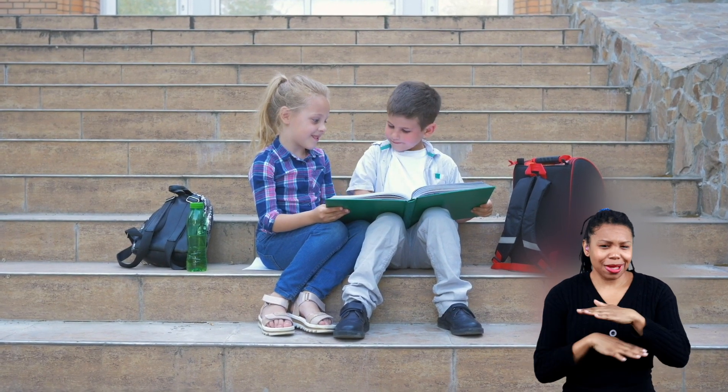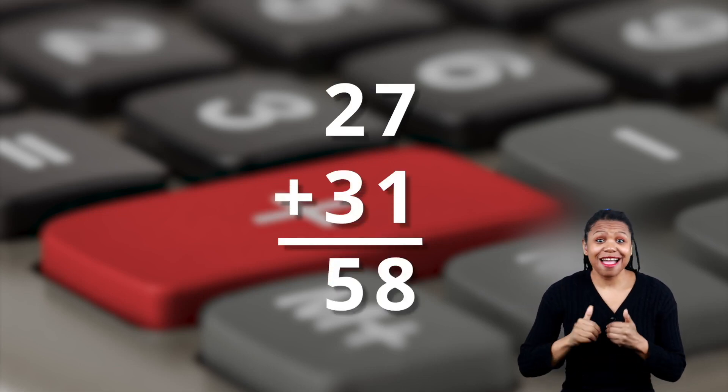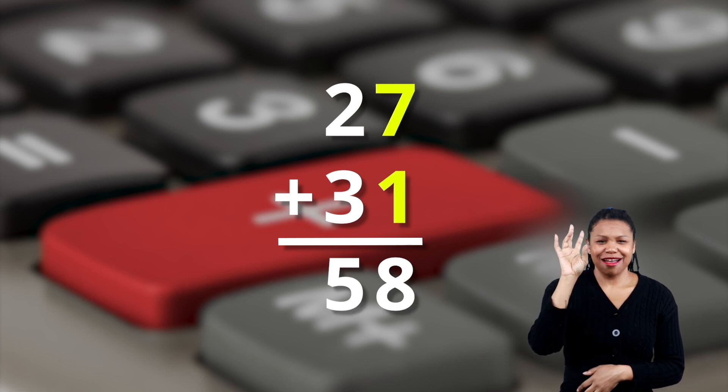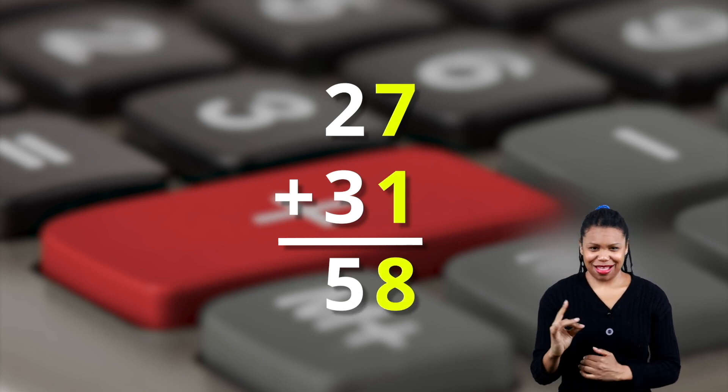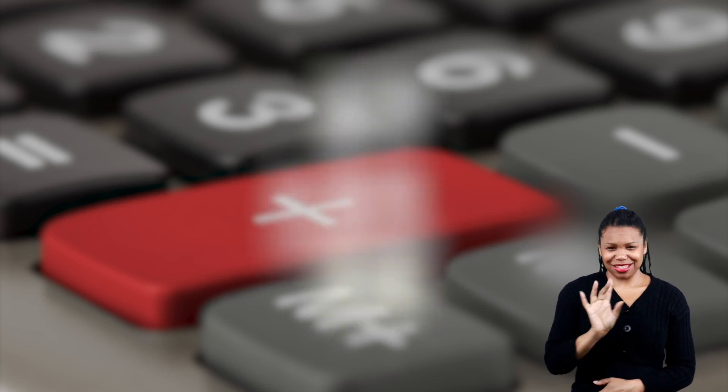Before we get to regrouping, let's review these basic addition problems. Twenty-seven plus thirty-one is fifty-eight. Do you see how we got that fifty-eight? Seven and one is eight, and then two plus three equals five. That's fifty-eight.